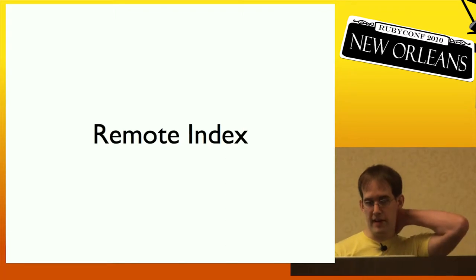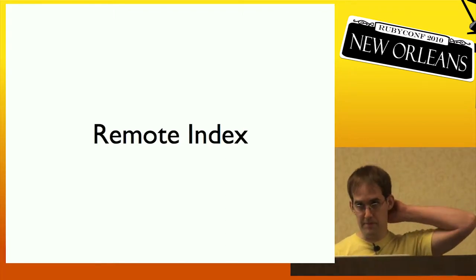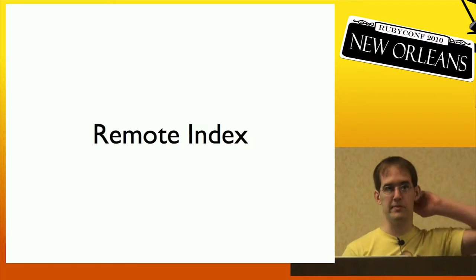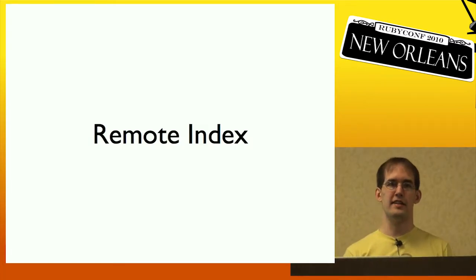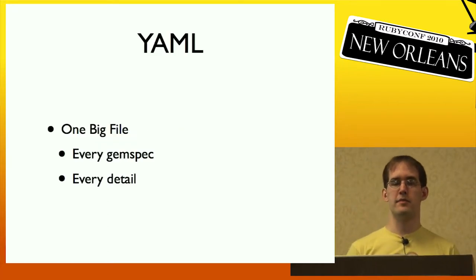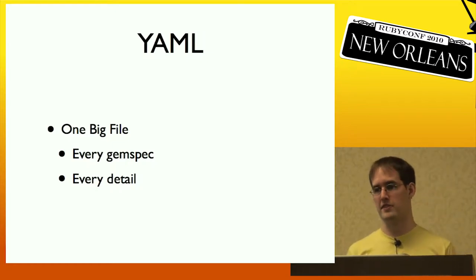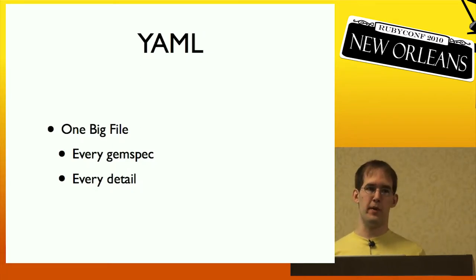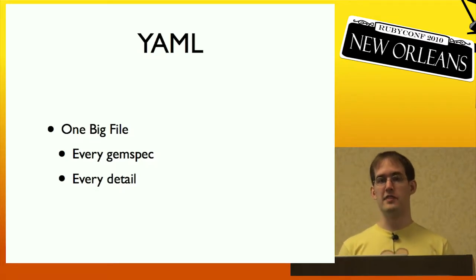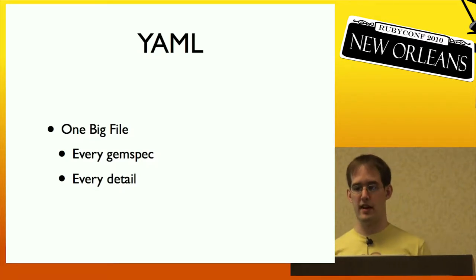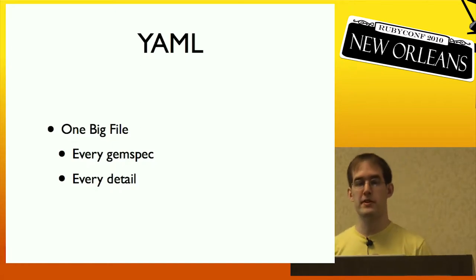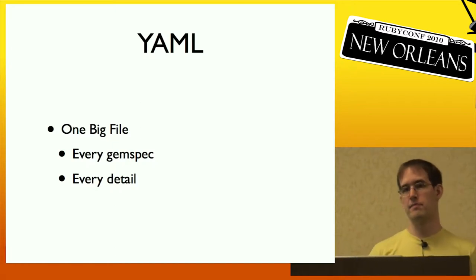The evolution of the remote index is long and painful, and some of you have been using RubyGems for a while — surely you remember the 'updating bulk index' pain. Originally RubyGems used one big YAML file that had every gem spec for every gem with every detail, including the file list. This was fine because there weren't many gems back then. But over time RubyGems became more popular, so that file got bigger and bigger and eventually got too big. In order to install a gem, you'd need to download this huge file to update your local cache.